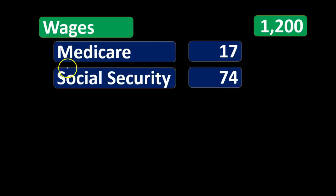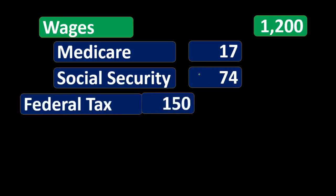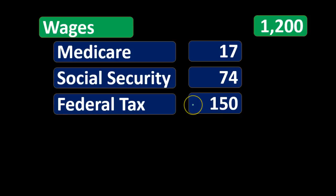Same with Social Security. Social Security is a federal payroll tax on the employee's wages of $1,200, and the employer is tasked with the responsibility of withholding that from the employee's wages. Then we have the federal income tax — again, this is the income tax on the employee, not the federal income tax the employer will owe based on their net income.